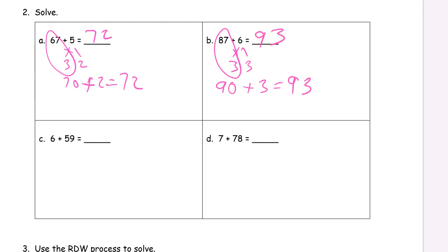So we're just practicing a mental trick of finishing — breaking up the smaller number and making a ten so it's easy to add the rest, the leftovers, to ten. This fifty-nine right here only needs one more to make it to sixty. So six is one and five. There's our sixty. Sixty plus five — sixty-five.